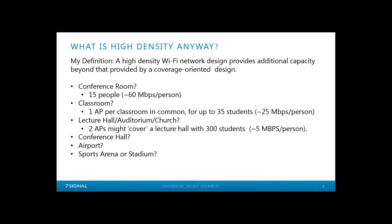Looking at a lecture hall, auditorium, or church — two APs might technically cover a lecture hall holding maybe 300 students, but that's only going to be five megabits per second per person. That's definitely into the high-density realm. You're definitely going to have a lot more APs in those situations than you would just for coverage. Conference halls could have shoulder-to-shoulder people, same with airports. Arenas and stadiums are their own animal — in a lot of cases it's really just one big room with tens of thousands of people in it. There's a spectrum from a conference room all the way up to a stadium, all of which needs you to consider the capacity requirements.